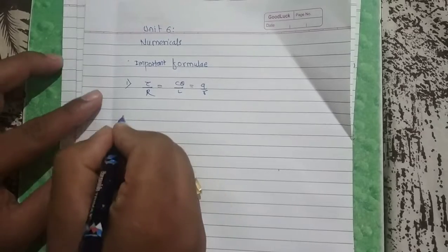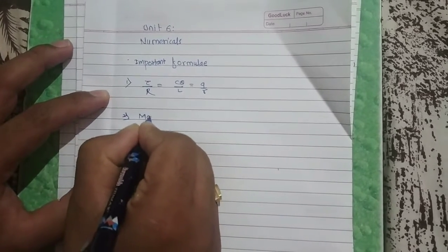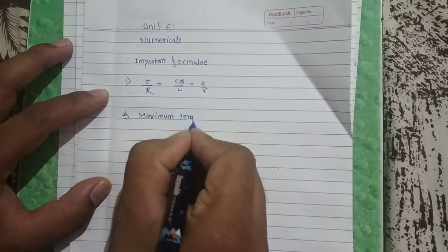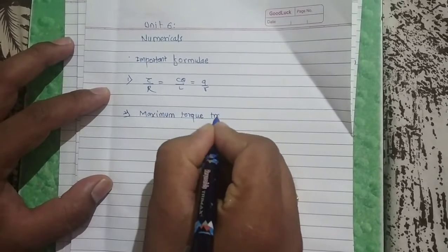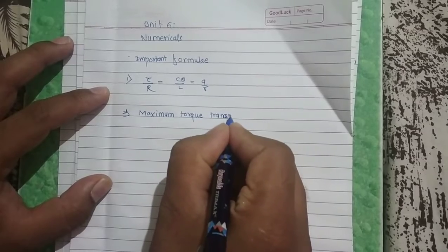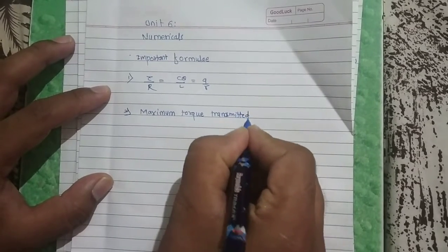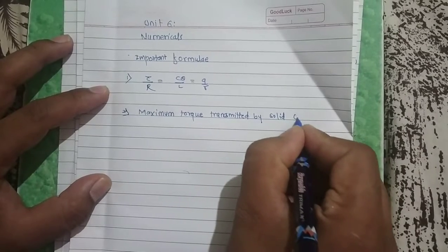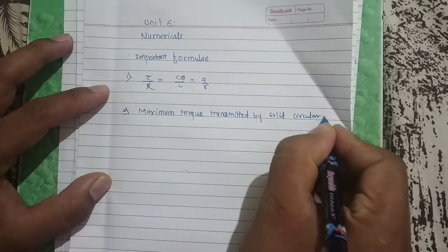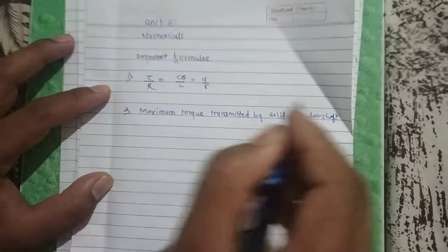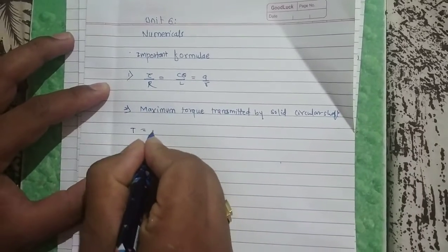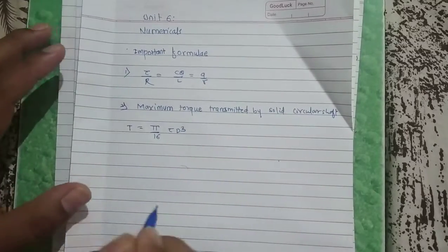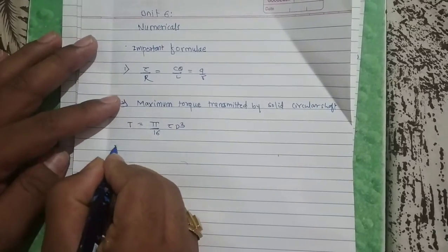Second one is the maximum torque transmitted by a solid circular shaft. That is T is equal to π/16 into τ into d cube.